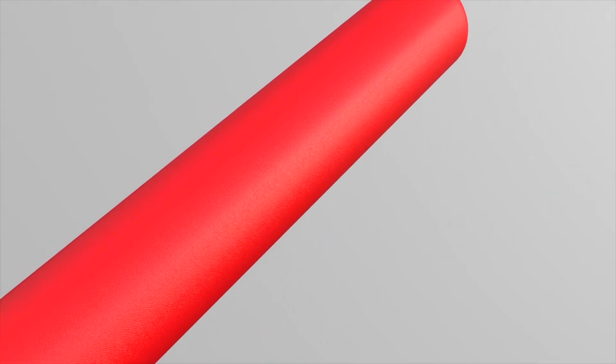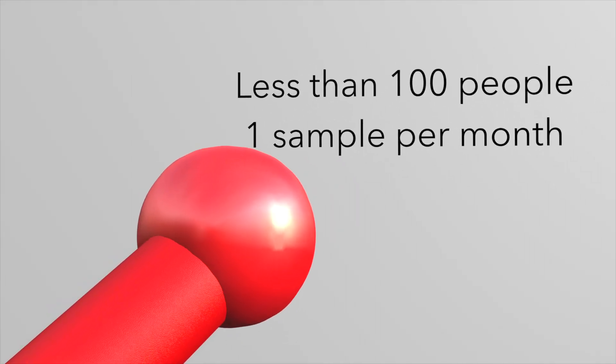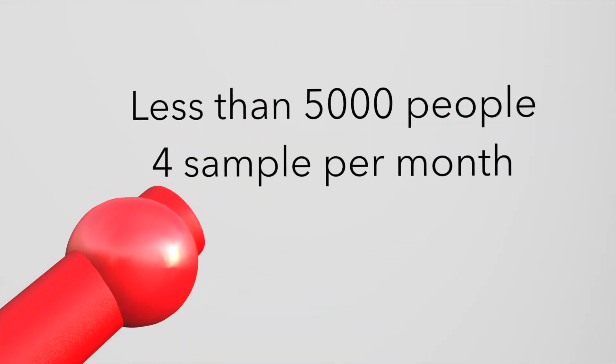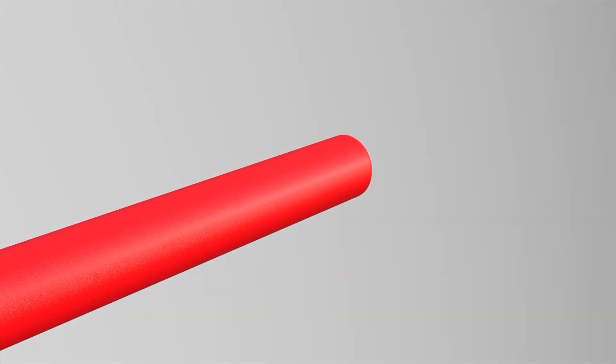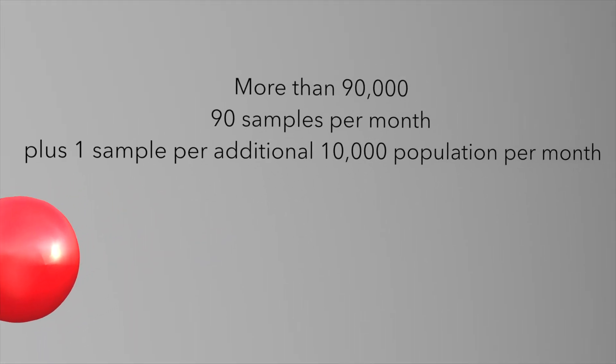When choosing locations in your distribution system for the collection of bacteriological water quality, choose locations throughout the system that are representative of all conditions within your distribution system, such as beginning, middle, and end of the system. The number of samples to be collected from your system each month is based on the population served by your water system. For no distribution system, public water dispensing units or very small systems serving less than 100 people require one sample per month. Distribution systems serving less than 5,000 people requires four samples per month. A system serving a population of 5,000 to 90,000 people would need one sample for every 1,000 people per month. For more than 90,000 people, a minimum of 90 samples are required, plus an additional sample for every 10,000 people per month.